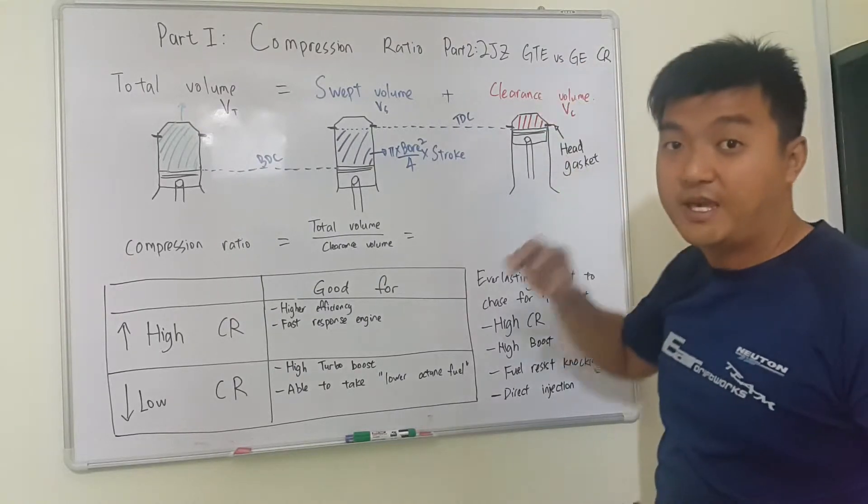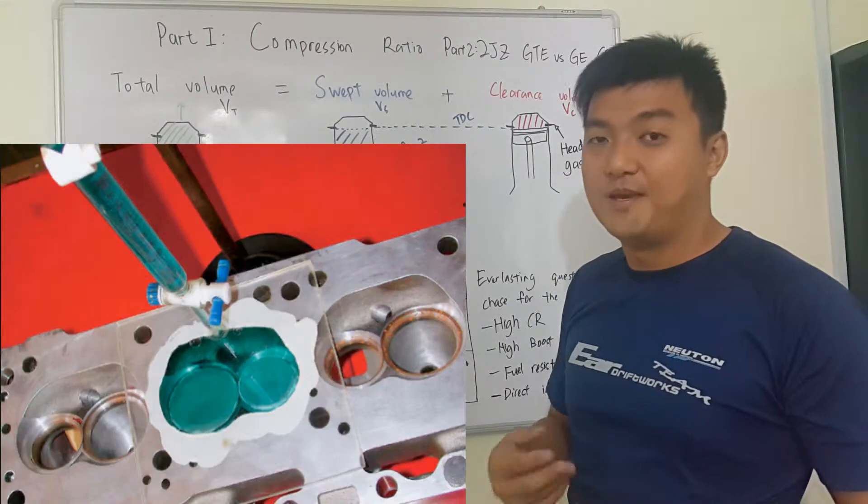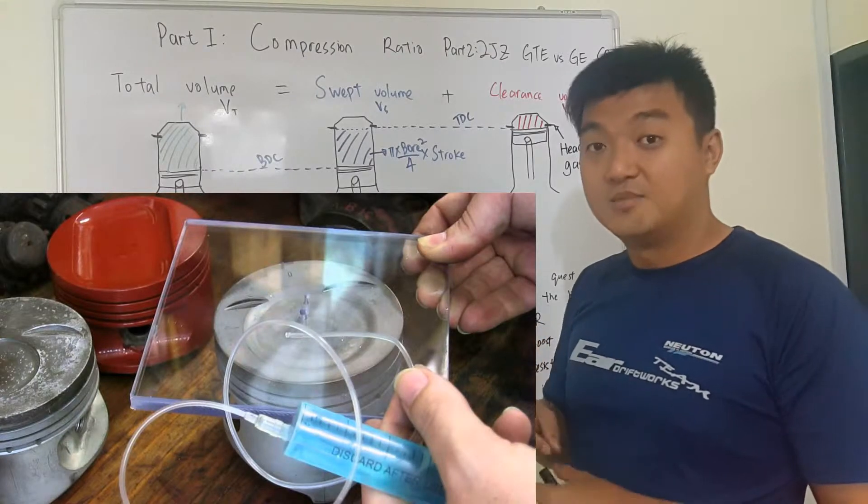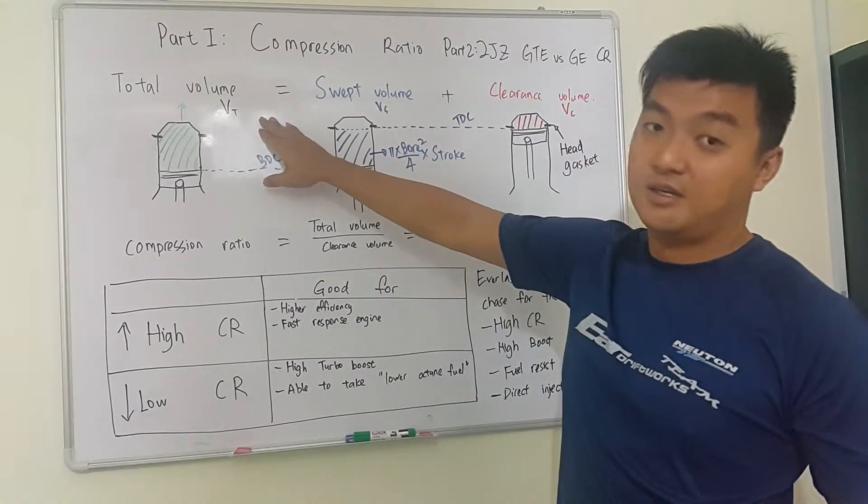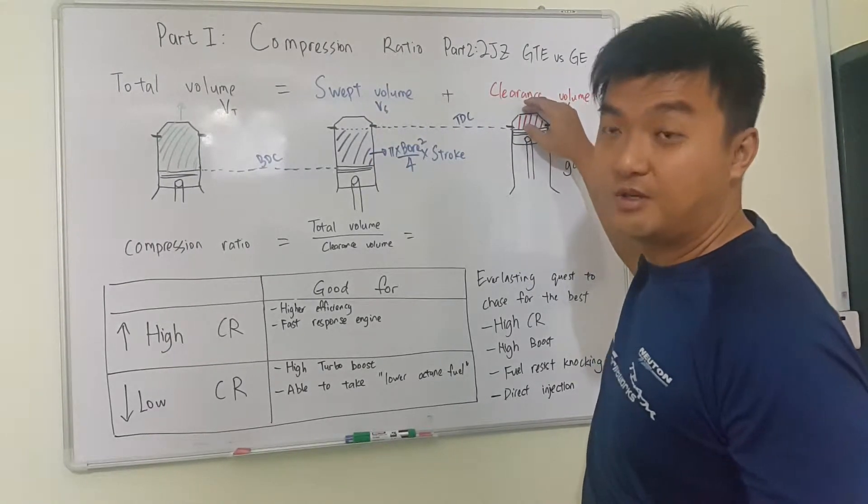But all this only can be measured, very hard to calculate that. So it only can be measured by using liquid alcohol or displacement test. So the total volume is equal to this swept volume plus this clearance volume.